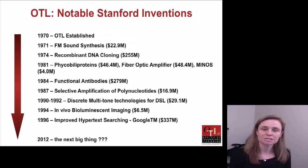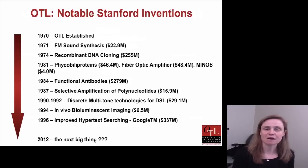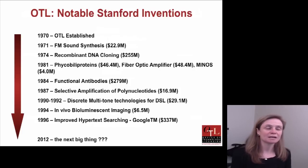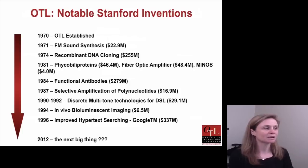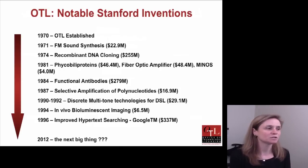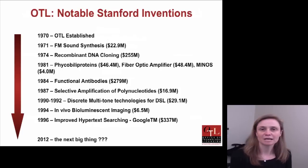Our current largest moneymaker is the functional antibodies technology from Vernanoi, Len Herzenberg, and Sherry Morrison — the patent expires in 2015 and is still generating income. Under 1990 to 1992, we had technologies used in the DSL standards. And our overall largest moneymaker was the PageRank algorithm from Google, because we received equity in part through our license to Google. However, the functional antibodies technology will likely surpass that income in the coming year or two.